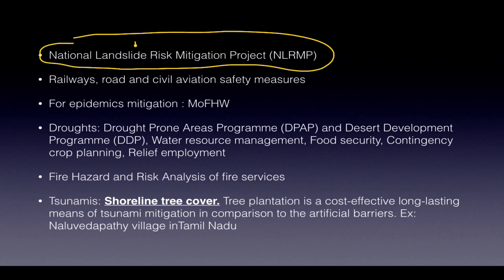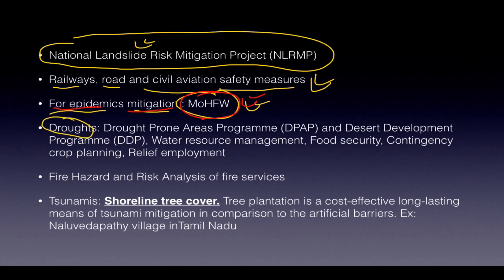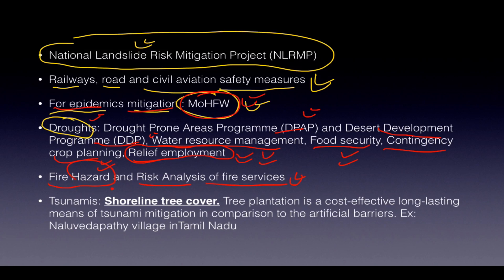For landslides, there is the National Landslide Risk Mitigation Project. Railways, roads, and civil aviation each have different safety measures. For epidemic mitigation, the Ministry of Health and Family Welfare is the nodal body. For droughts, the Drought Prone Area Program and Desert Development Program focus on water resource management, food security, contingency crop planning, and providing relief employment.